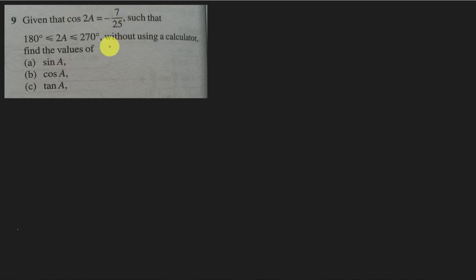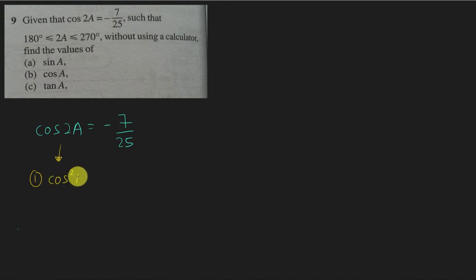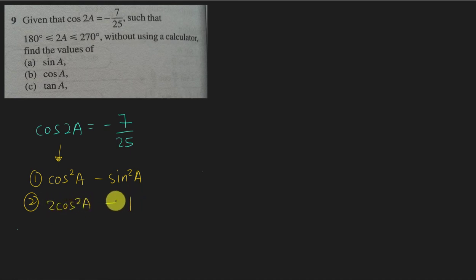So first, I will copy down this equation: cos 2A equals negative 7 over 25. When I see cos 2A, I know about 3 formulas — you can easily find them in your reference book. Since this is a double angle, you look for the double angle formula for cosine. The first formula is cos²A minus sin²A. The second formula is 2cos²A minus 1. The third formula is 1 minus 2sin²A.